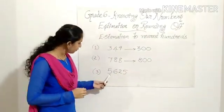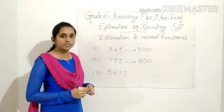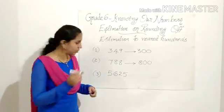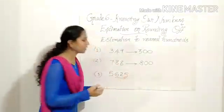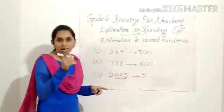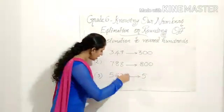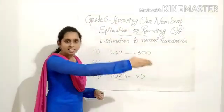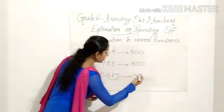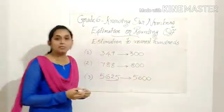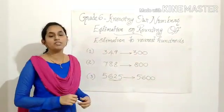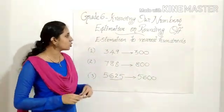The last example is 5,625 — a 4-digit number. In estimation to nearest hundreds, you have to check the last three digits, which is 625. You write the 5 unchanged and just check 625. 625 lies between 600 and 700, and 625 lies near to 600. So I write 600 here, and the answer is 5,625 gets estimated to 5,600. That is estimation to nearest hundreds.